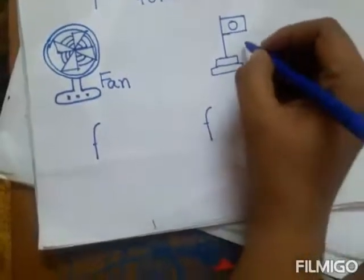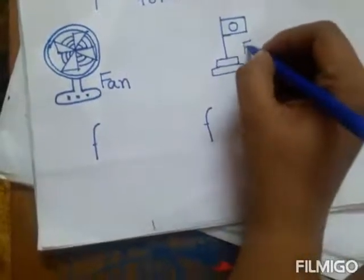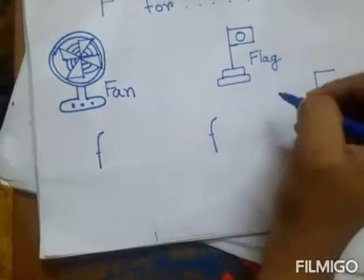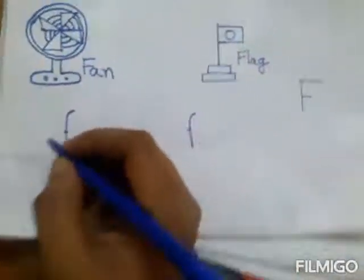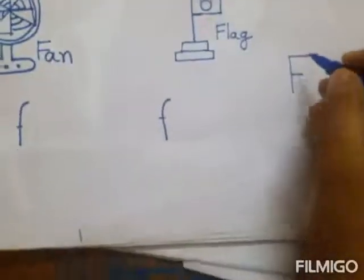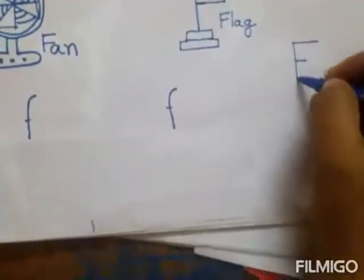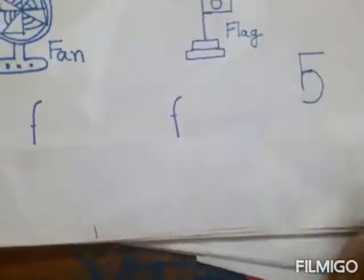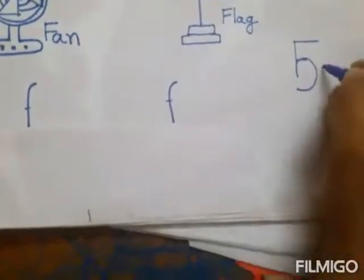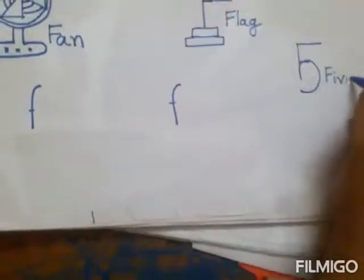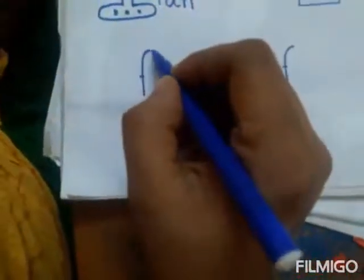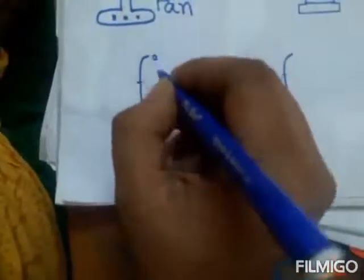Flag starts with F — F-L-A-G, flag. Now I'm writing five — number five, F-I-V-E, five, with small letter f.